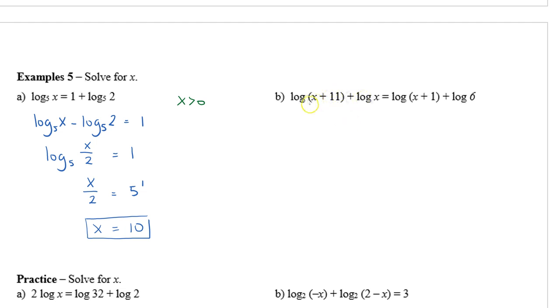Let's take a look at the second one. In the second equation, we have a log for every single term. So we're going to combine the logs on the left and combine the logs on the right. Both of them are adding, so we're going to multiply.